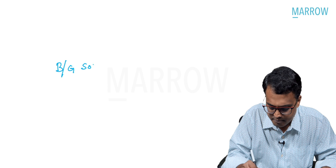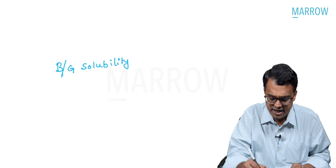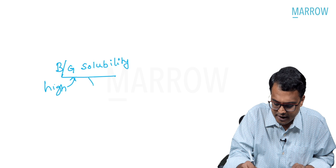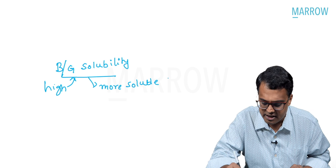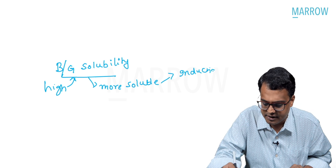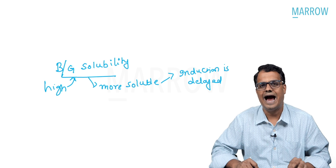There are five things to remember in inhalational anesthetic topics: first, MAC; second, concentration effect; third, second gas effect; fourth, blood-gas solubility ratio; fifth, diffusion hypoxia. If they ask about blood-gas solubility — B/G solubility — if an agent has a high B/G value, that means it is more soluble in blood, which means induction is delayed. We already discussed this topic; this was the question asked in your entrance examination.